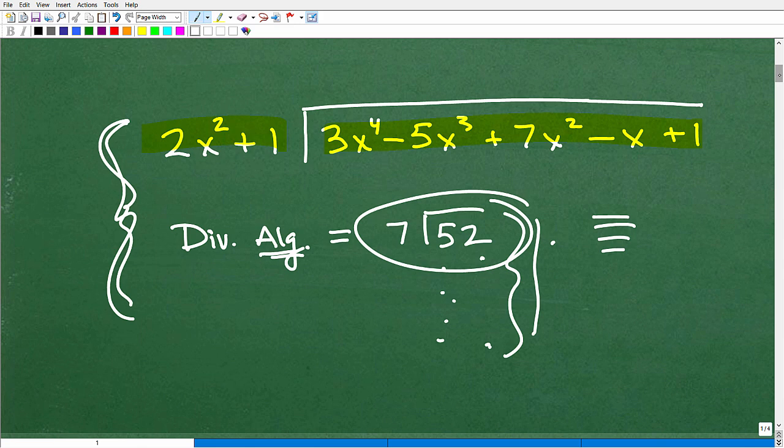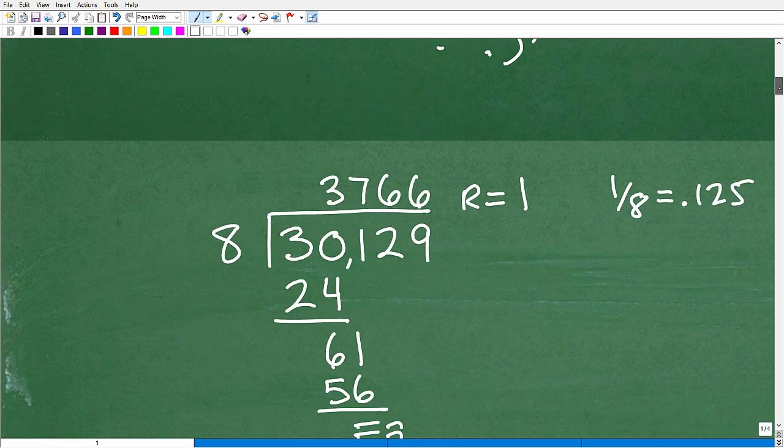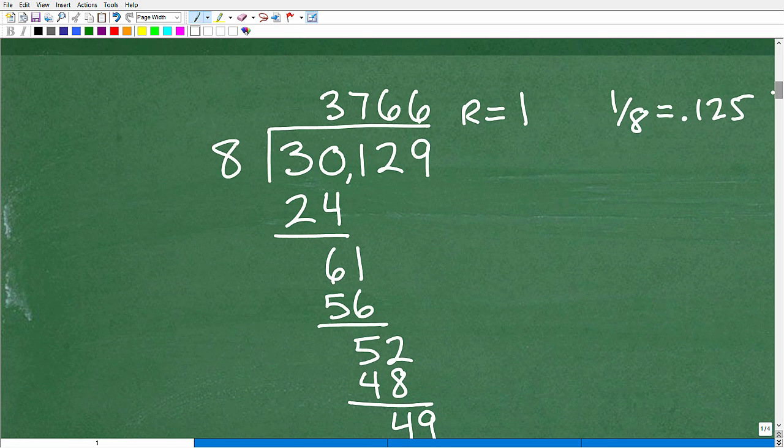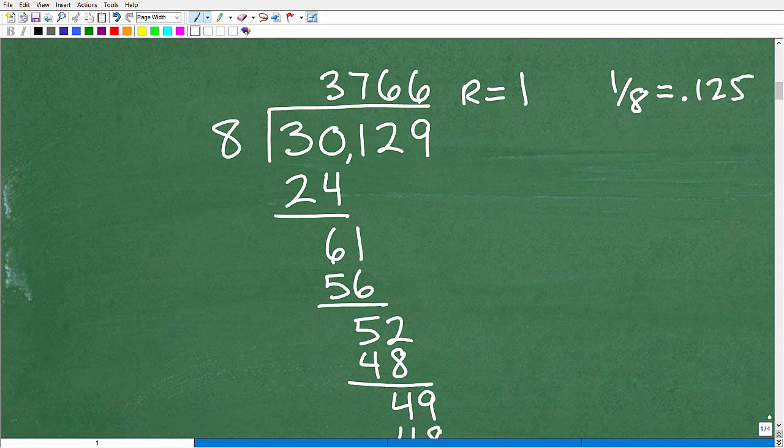And now, without further ado, let's go ahead and see my work. All right, now if you have a calculator handy, and you probably do, maybe your cell phone, go ahead and take 30,129 divided by 8, and you should get 3766.125. So 3766.125, that's what your calculator will give you. But let's go ahead and see my work here.